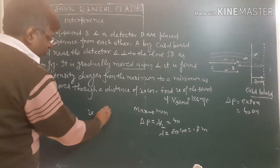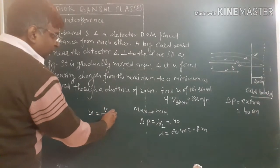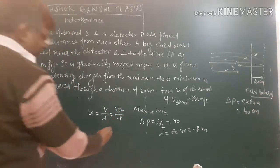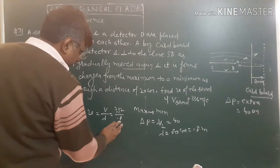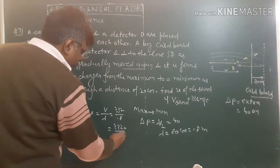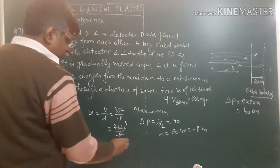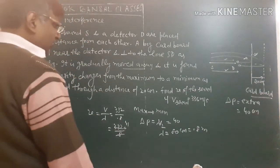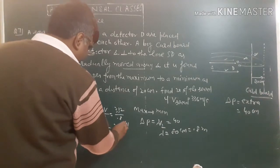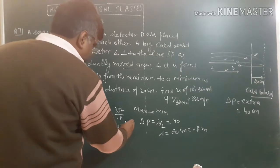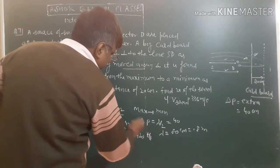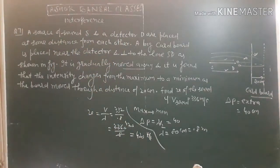The frequency equals velocity upon wavelength. This is 336 upon 0.8. 8 times 32 is 32, 336 divided by 8 is 32... This frequency is 420 Hz.